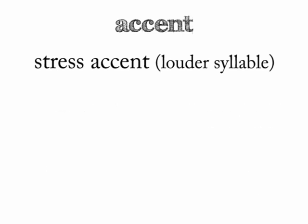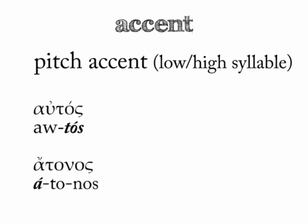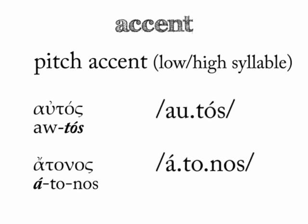Words can have a pitch accent instead in some languages. Pitch involves raising or lowering the tone, as in music. For instance, the ancient Greek word 'autos' has a high pitch on the last syllable, while the word 'átonos' has a high pitch on the first syllable. The other syllables have a lower pitch. Words can be distinguished that way. We can represent basic pitch changes in IPA with an acute accent above high-tone vowels and a grave accent above low-tone vowels.